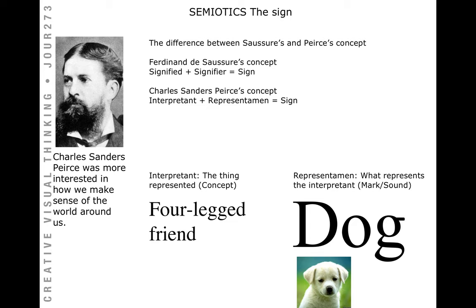Then we had Charles Sanders Peirce, who was slightly different from Saussure. In his concept, the interpretant plus the representamen equaled the sign. The interpretant was the four-legged friend, the representamen was what represented it — the word 'dog,' the picture of a dog, the sound of a dog. Peirce was more interested in how we make sense of the world around us.